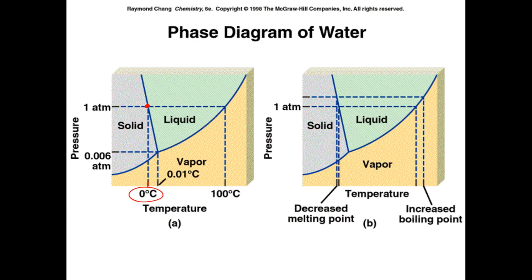If we raise the pressure — say to 1.5 atmospheres — we come over and read the graph and see that in this instance the melting point actually decreased as the pressure went up. That is unusual. It is unusual for the melting point to decrease as the pressure rises, but water does do that — its melting point decreases at higher pressure.